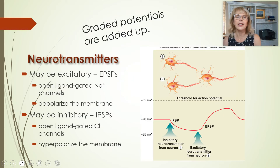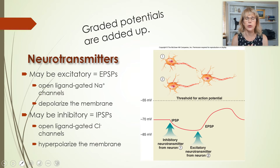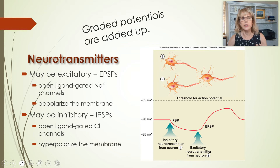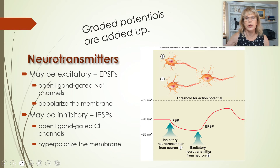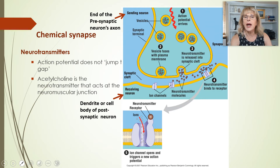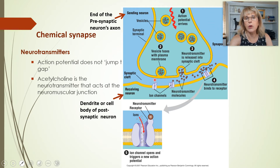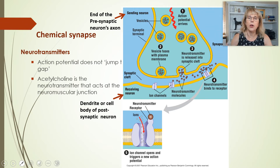We're talking about graded potentials, which are different from action potentials in a number of ways. Action potentials use voltage-gated channels; graded potentials use ligand-gated channels. Because voltage-gated channels open each other, action potentials either happen or they don't. But ligand-gated channels don't open each other — just because one channel is open doesn't mean it will open the adjacent channel. That is why action potentials are all or none.